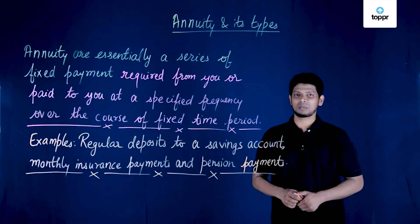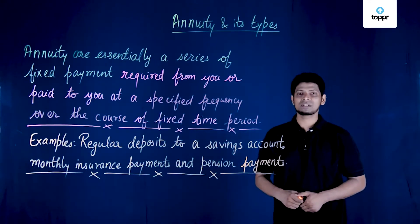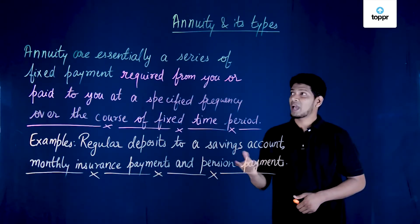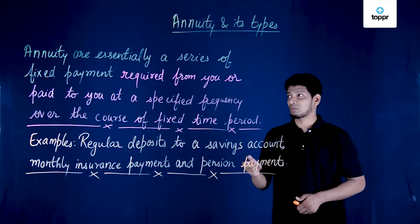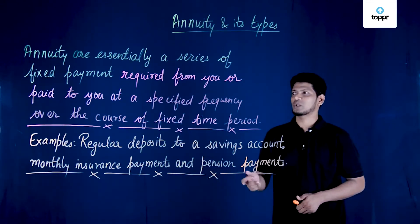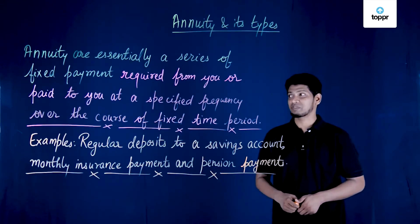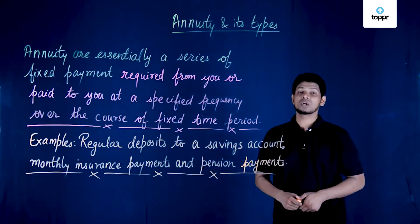Hi students, today's topic of discussion is annuity and its types. So first let us understand what is annuity. Annuities are essentially a series of fixed payments required from you or paid to you at a specified frequency over the course of a fixed time period.